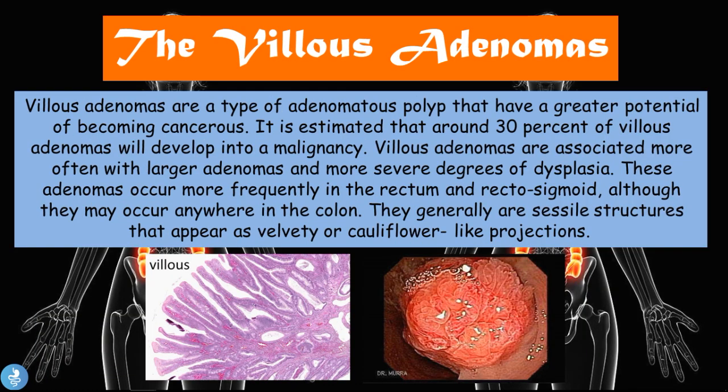Villus adenomas are a type of adenomatous polyp that have a greater potential of becoming cancerous. It is estimated that around 30% of villus adenomas will develop into a malignancy. They are associated more often with larger adenomas and more severe degrees of dysplasia — meaning cells that are growing in an uncontrolled, abnormal manner. These adenomas occur more frequently in the rectum and rectosigmoid region, although they may occur anywhere in the colon.